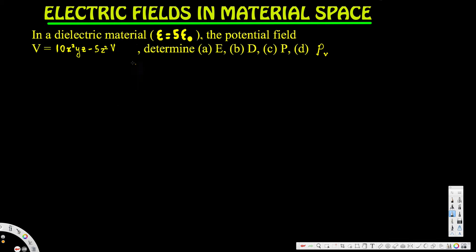What's going on guys, let's look at this problem right here. This question is asking: in a dielectric material, epsilon is equal to 5 epsilon naught, the potential field V is equal to 10x²yz minus 5z² volts. Determine E, D, P, and rho_v.